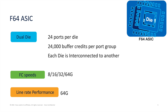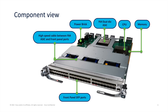The power limit used is the same as the 32GB module. Looking at the component view, you have front panel ports and the F64 dual ESIC running in the back of the module, connected via high-speed cables. These cables connect all components with the CPU, memory, and power brick. How is this module better than the existing F32 module?